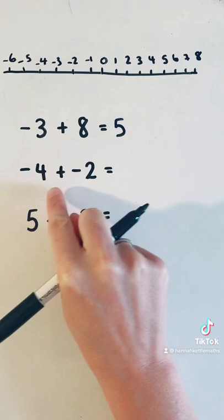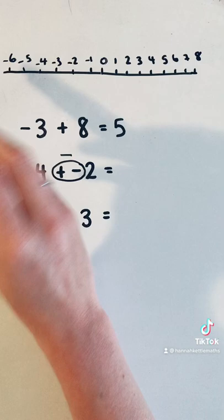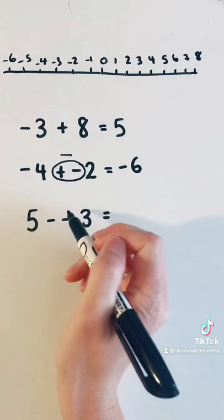-4 + (-2). Now when you've got two symbols right next to each other like that, an add and a subtract, it becomes a takeaway. So we've got -4, take away 2. We'll start at -4, take away 2, which takes us to the left, and that one is -6.